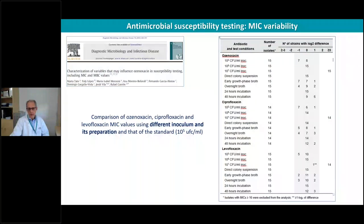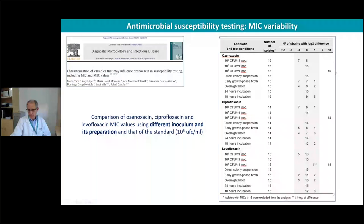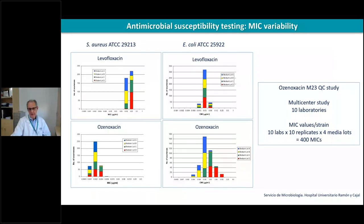With the same compound, using different inocula shows that if we increase from 10^3 to 10^5 to 10^7 bacterial cells in the medium, there is a shift upward in the MIC values. The inoculum preparation when studying a microorganism against a compound is very important for obtaining a precise MIC.